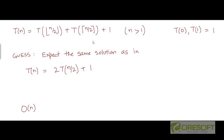For example, the floor of 2.5 is 2 and the ceiling of 2.5 is 3. If the number is a whole number, such as taking the floor or ceiling of 2, the answer in either case is the number itself, which is 2.